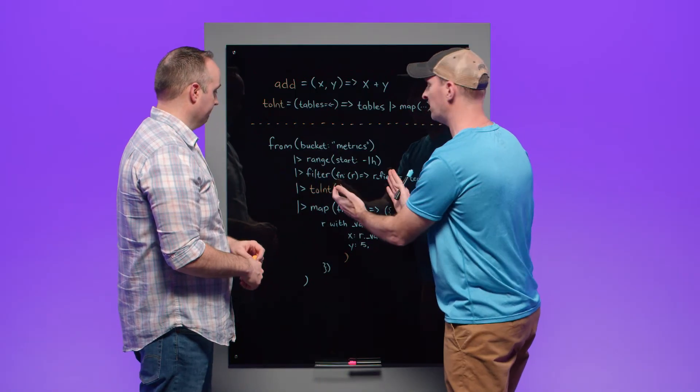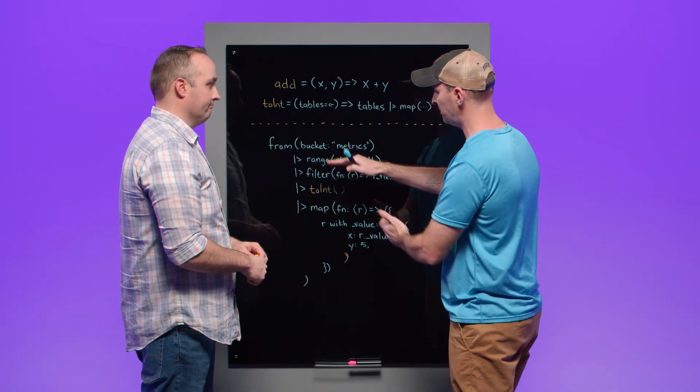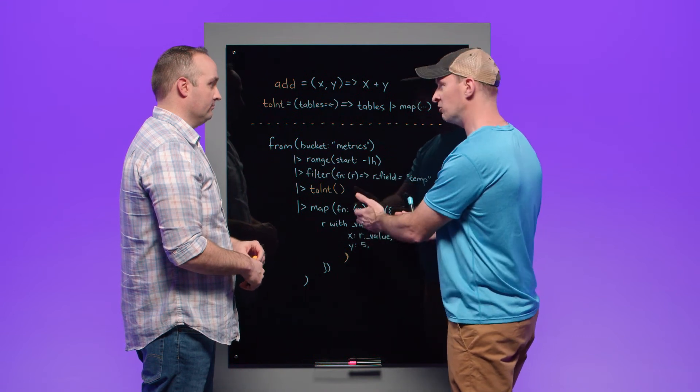Well, it makes sense why order matters because it looks like we're reducing the size of our data set with each specific function here, and then we're doing something useful with that specific set. Absolutely. I mean, the whole point here is to query and modify data and structure it in a way that's useful for you. That makes sense.